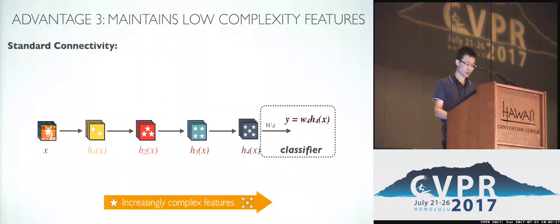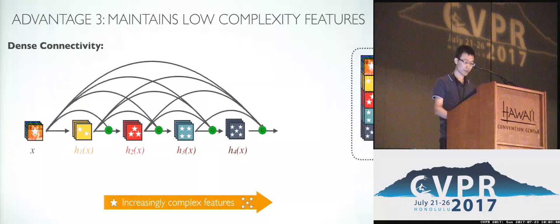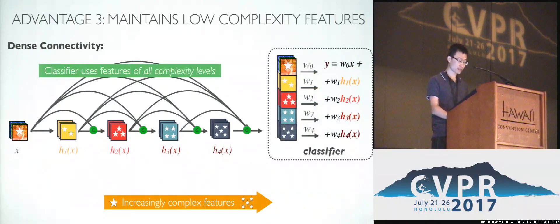The third other advantage is DenseNet maintains low complexity features across the network. In a standard ConvNet, the final classifier is built on top of the last convolution layer, which produces most high-level features and also most complex features because it composes many nonlinear transformations. In a DenseNet, the classifier depends on features from all complexity levels, and it uses both complex features and also simple features. These tend to give more smooth decision boundaries, and this usually gives high generalization performance. This probably explains why DenseNet works especially well when the training data is insufficient.